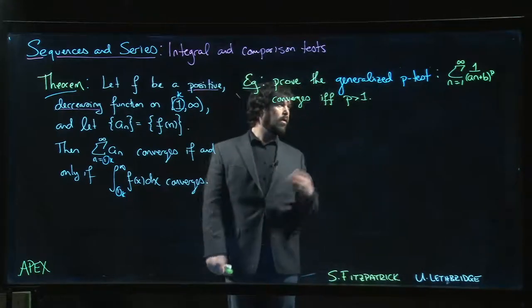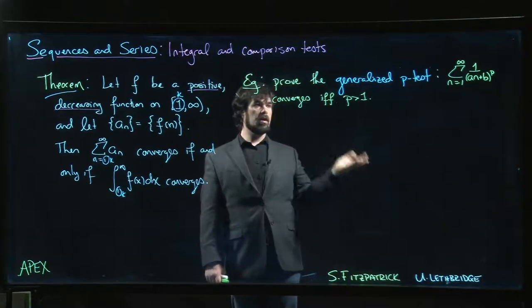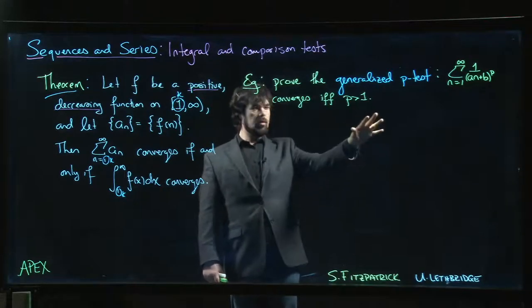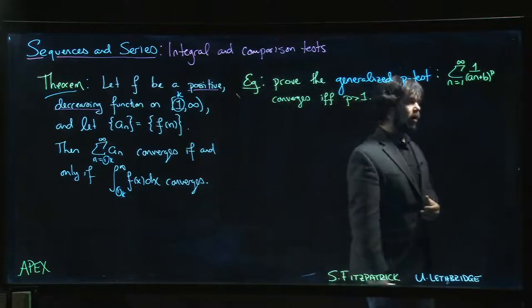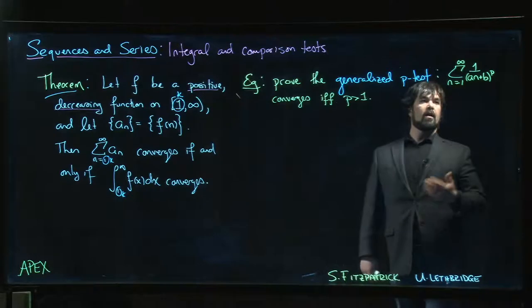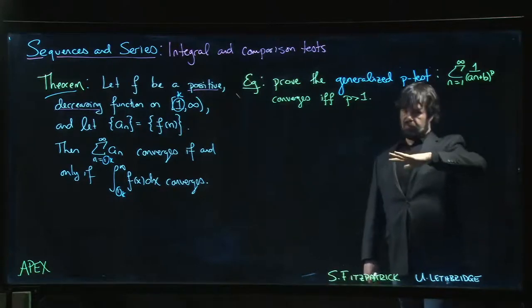Alright, so next we're going to prove a result that was promised in the previous section: the p-test. We'll do it in general. Of course, you can set a equal to one, b equal to zero and get the regular p-test, but we'll do the general version because if we prove it in general, it's going to apply to the special case as well.